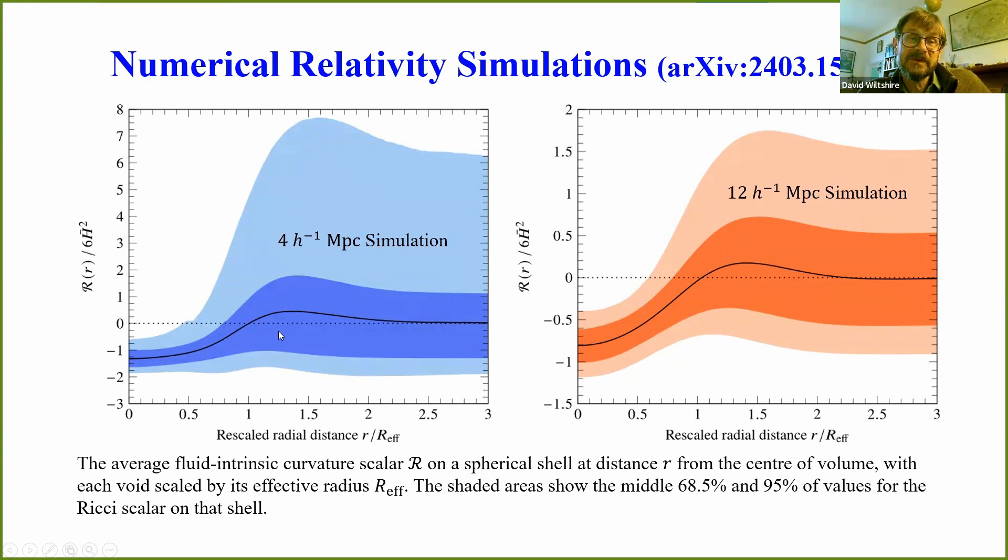We do see the negative spatial curvature. It is there in the original simulations. Moreover, I do understand why Julian Adamek and others, what exactly the steps that they're doing, which appear to be things that agree.